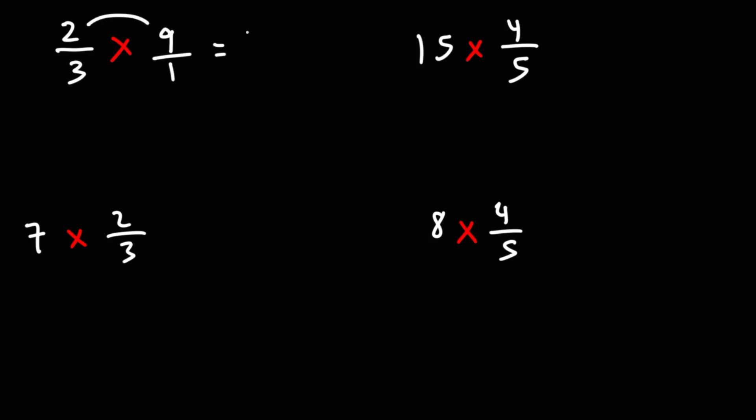So 2 times 9 is 18, 3 times 1 is 3, and then 18 divided by 3 is 6. So that's all we need to do for the first example.